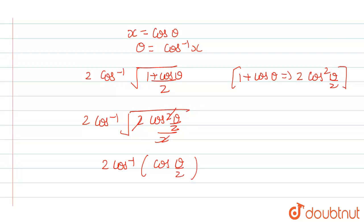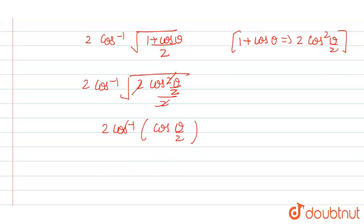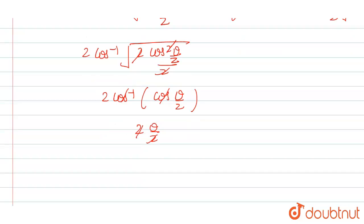2 cos inverse of cos theta by 2. So from here, cos inverse cos cancel each other out. So we get 2 theta by 2. 2 and 2 will cancel each other out. So we get theta.